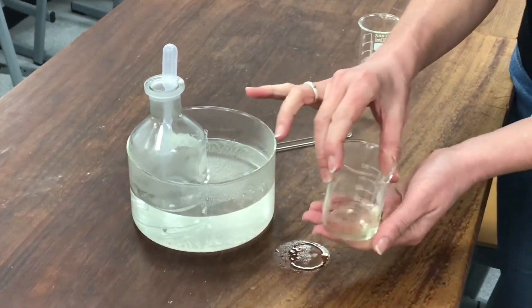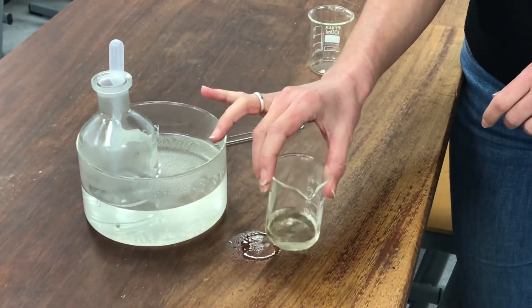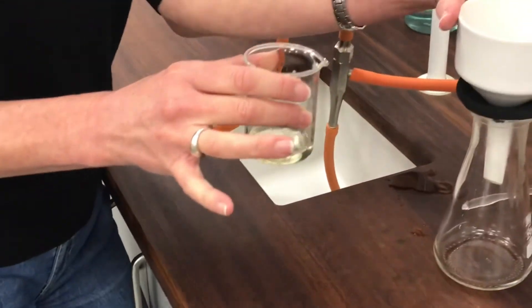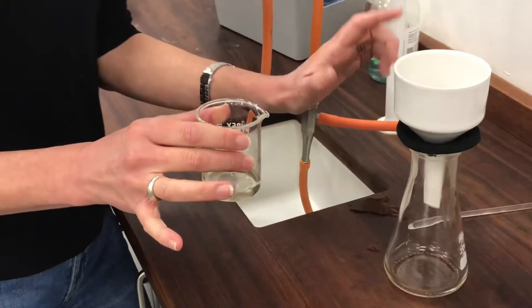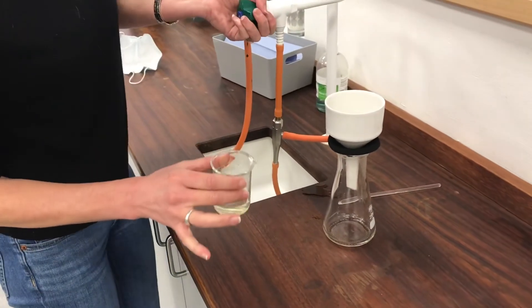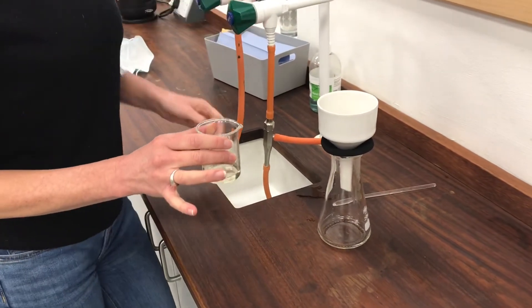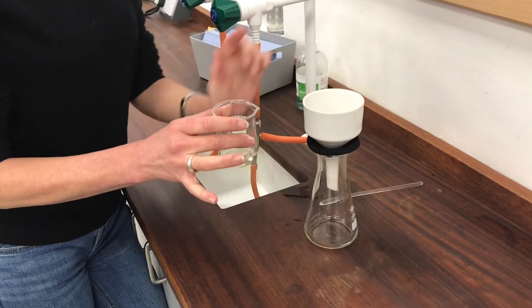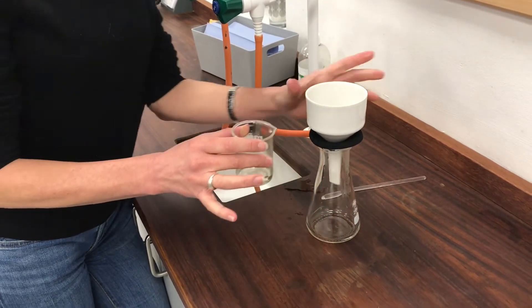So I've got that to dissolve now in this minimum amount of hot ethanol. And now what I want to do is to suction filter it through hot apparatus. So I've already poured a kettle full of hot water through this to heat it up. So I'm going to turn on my suction filter. And this time the product that I want is going to be in the bottom. It should be the filtrate.